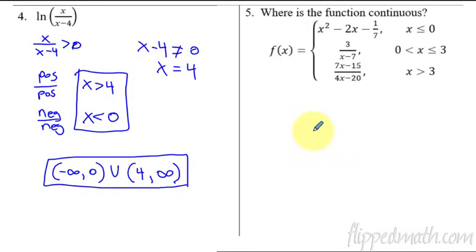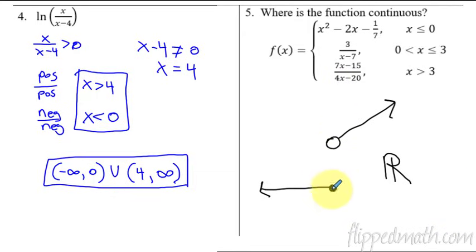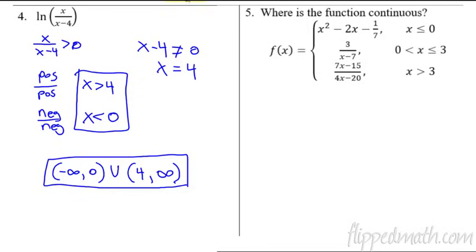Now we're asking where is the function continuous — not just what is the domain. These might seem similar but they're not the same thing. For example, imagine a function that exists for all real numbers but has a jump in it: the domain is all real numbers, but it's not continuous everywhere because of that jump discontinuity. Discontinuous does not mean the graph doesn't exist. So make sure you understand the difference between asking when is it continuous and what is its domain, because those are not always the same thing.